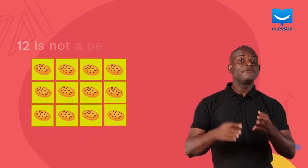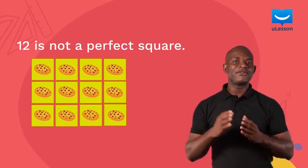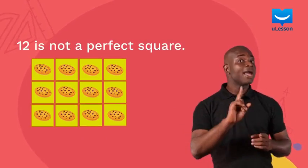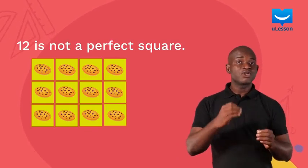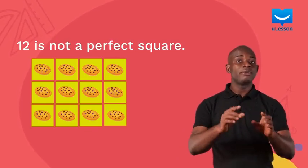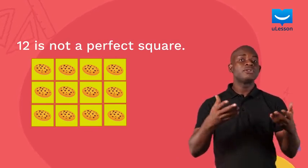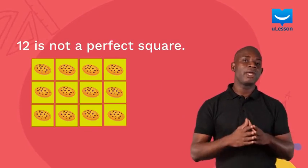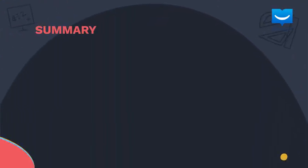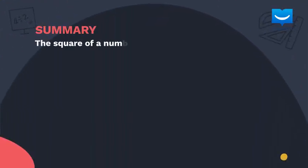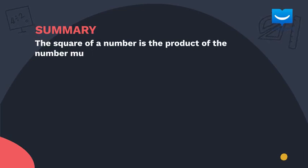So, 12 is not a perfect square. Hence, the name for perfect squares comes from their ability to be arranged to fill up a square. So, in this lesson, we have seen that the square of a number is the product of the number multiplying itself. Love learning.